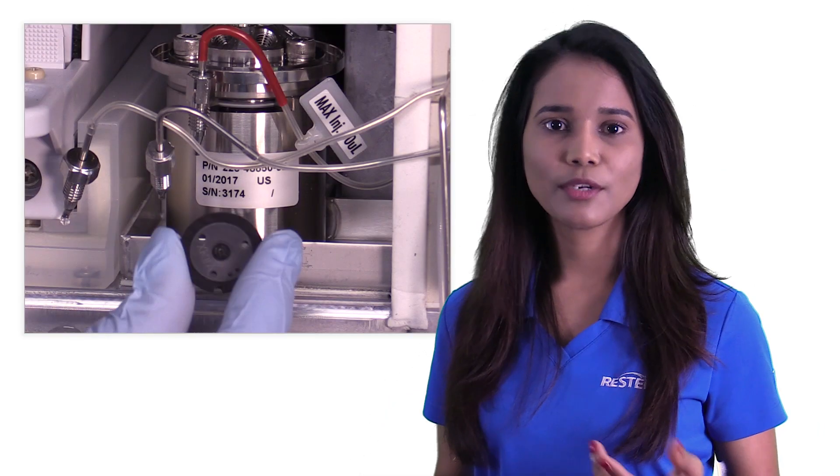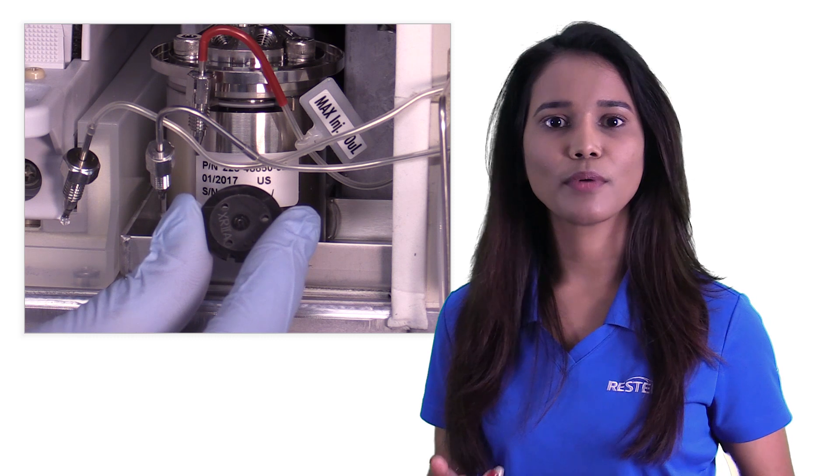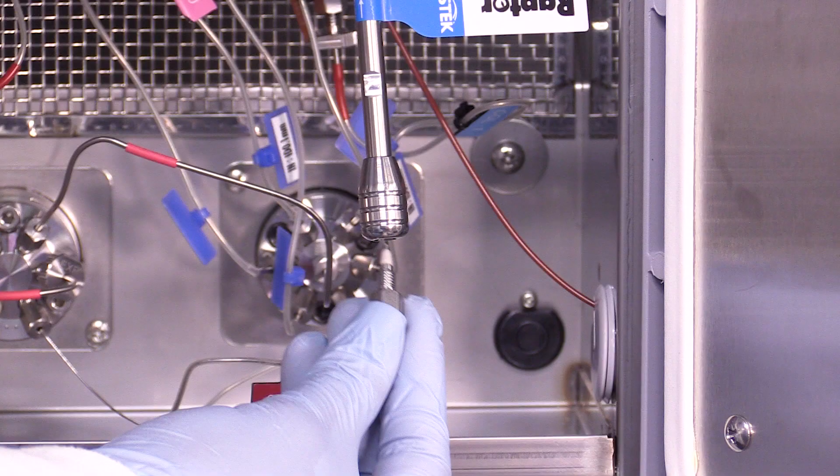At times, normal wear of the injection valve rotor seal and pump seals also generates particulates that can clog the column packing bed. You can avoid this by simply replacing the parts as a part of your routine preventative maintenance schedule.